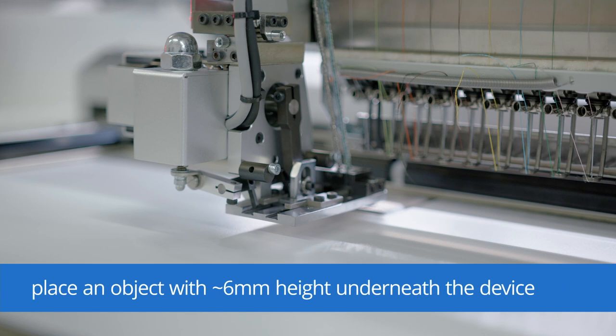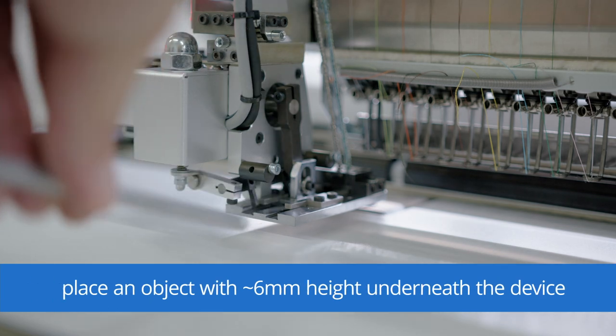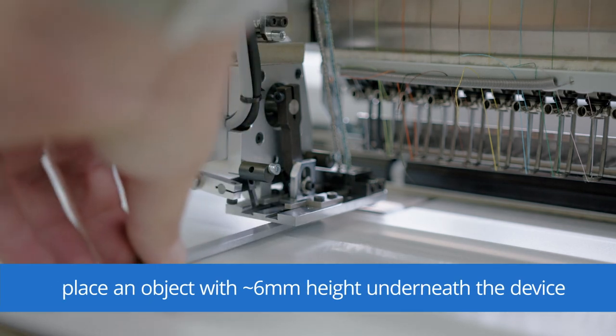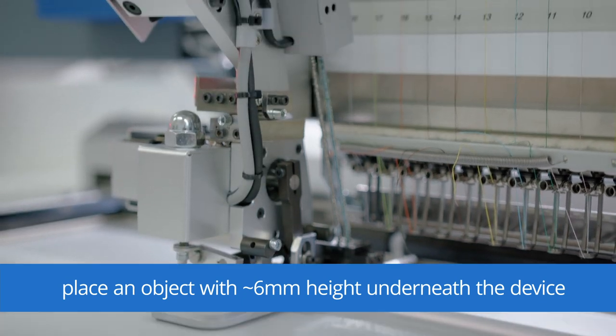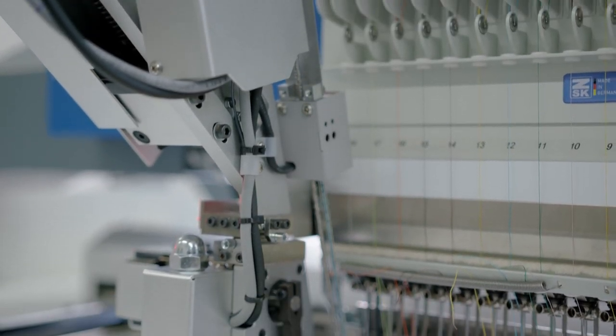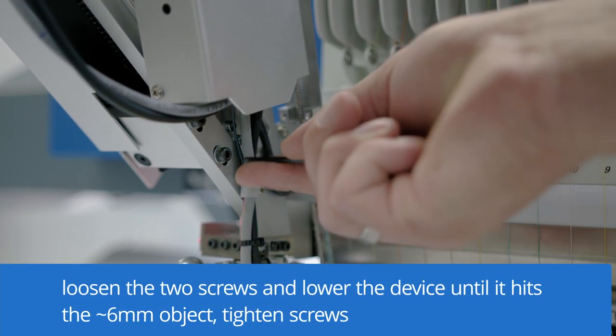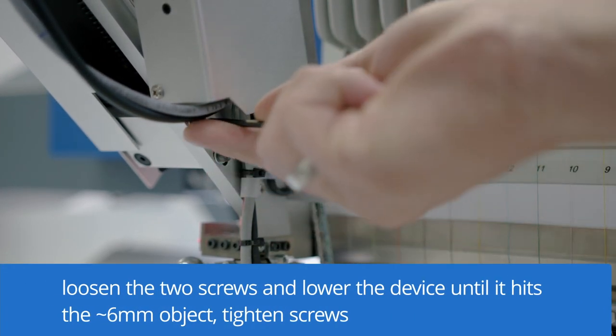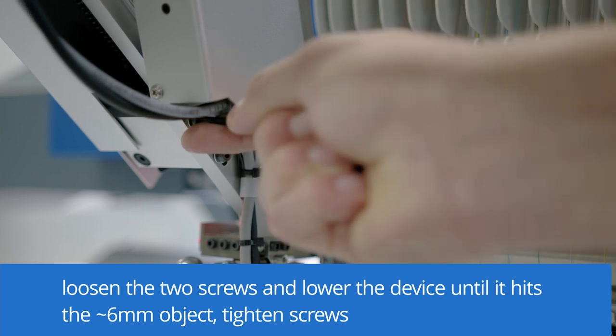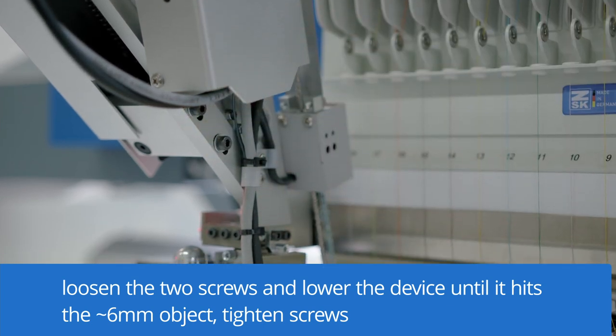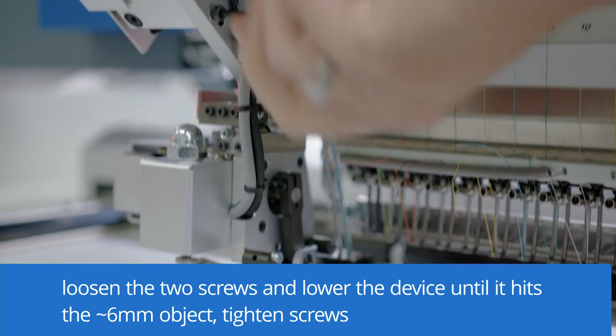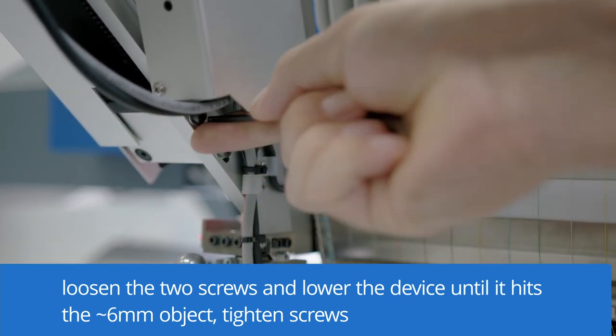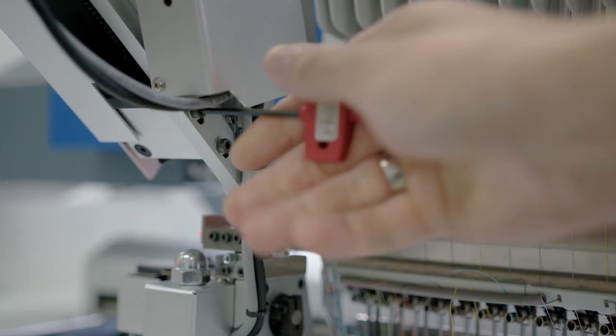To set the height of the device, we place an object with a height of approximately 6 millimeters between the foot of the device and the stitch plate. We need to loosen the two screws and lower the device until it hits the object. Then we can tighten the two screws and the height setup is done.